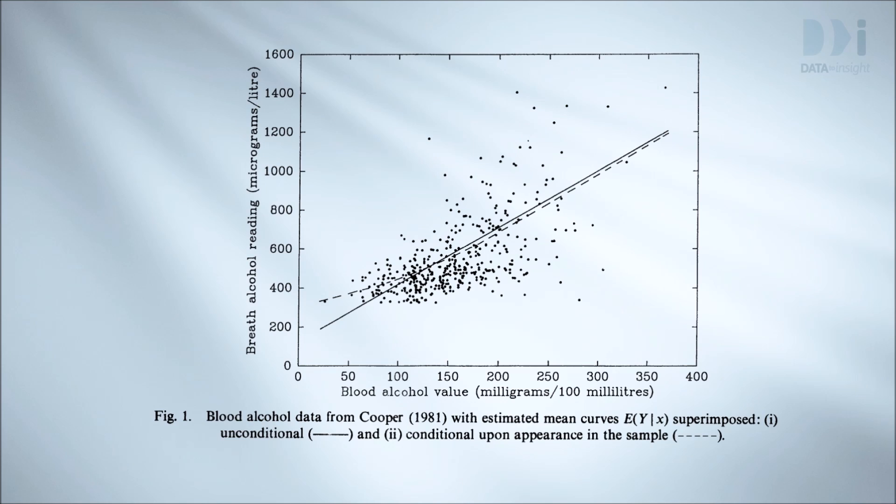This is a graph of breathalyser and blood alcohol readings from people stopped by police on New Zealand roads. With the procedures used at the time, drivers with a breath reading below a lower limit, 325, were under the limit and sent on their way without a blood test.